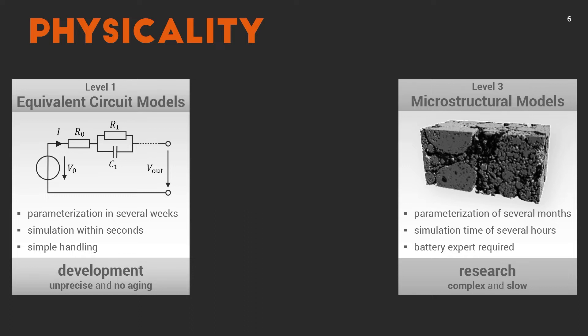However, they are linear and they are imprecise. A battery is not a resistance and RC element. It's way more complicated. Also, covering aging with these types of models is difficult. And the reason is that the different aging mechanisms mix differently in the parameters depending on the aging state.